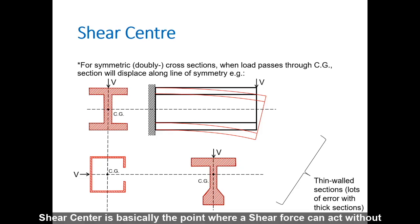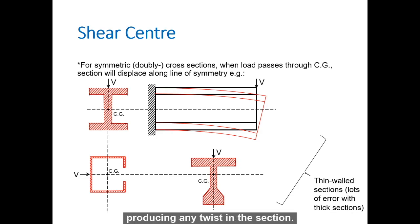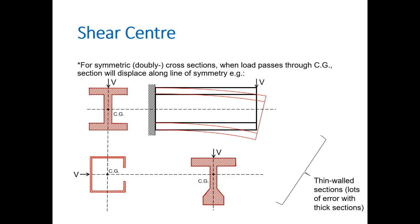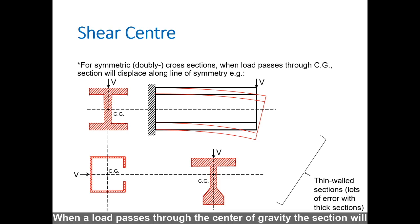Shear center is basically the point where a shear force can act without producing any twist in the section. As you can see in the four figures below, these are all symmetric cross sections. When a load passes through the center of gravity, the section will displace along the line of symmetry.